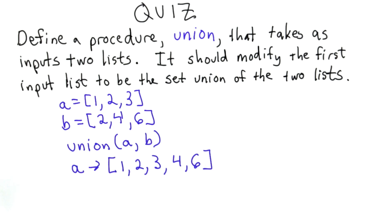After the call, the value of A should be the list 1, 2, 3, 4, 6. We've added the elements of B to A, except we skipped the first element, the value 2, since 2 already exists in A.